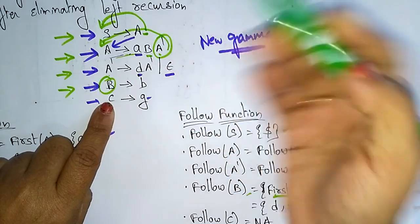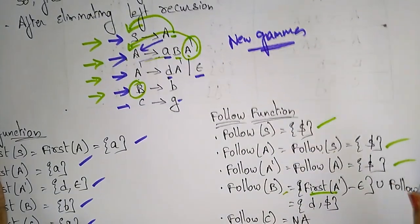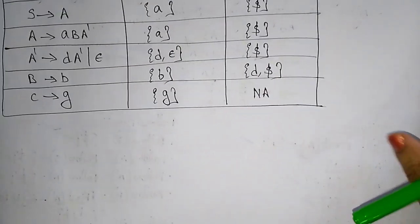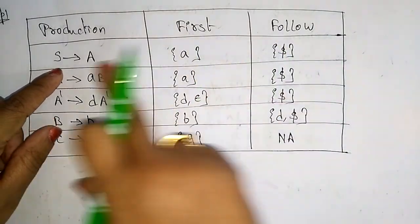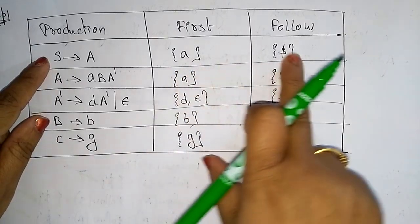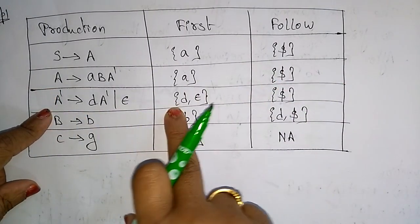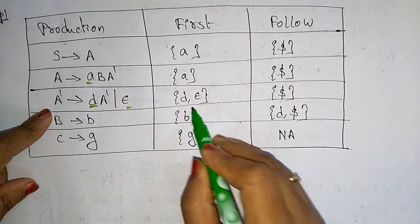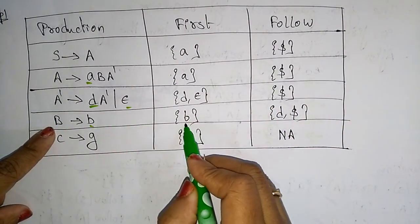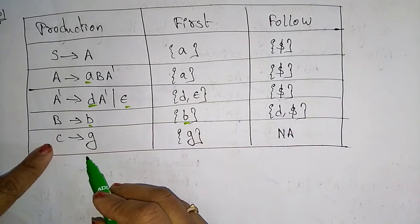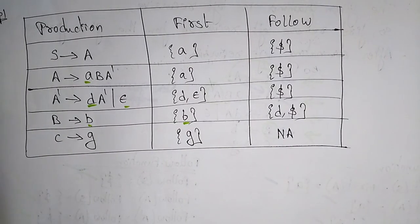For FOLLOW(C): C does not appear on the right-hand side of any production, so it is not accepted. To summarize the FIRST and FOLLOW sets: FIRST(S)={a}, FOLLOW(S)={$}; FIRST(A)={a}, FOLLOW(A)={$}; FIRST(A')={d,ε}, FOLLOW(A')={$}; FIRST(B)={b}, FOLLOW(B)={d,$}; FIRST(C)={g}, FOLLOW(C)=not accepted.